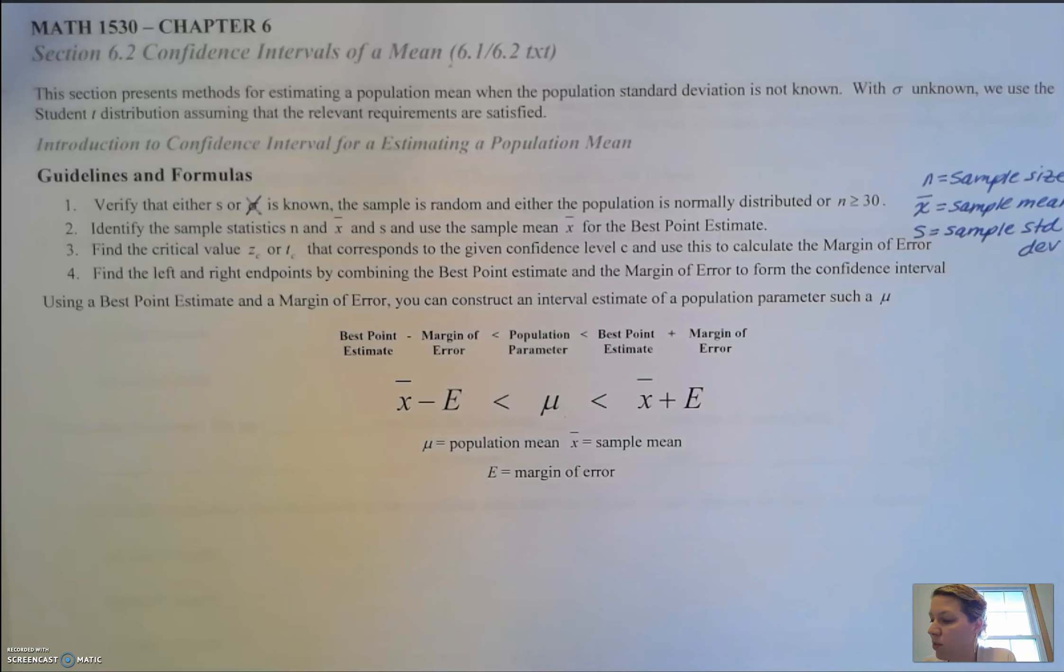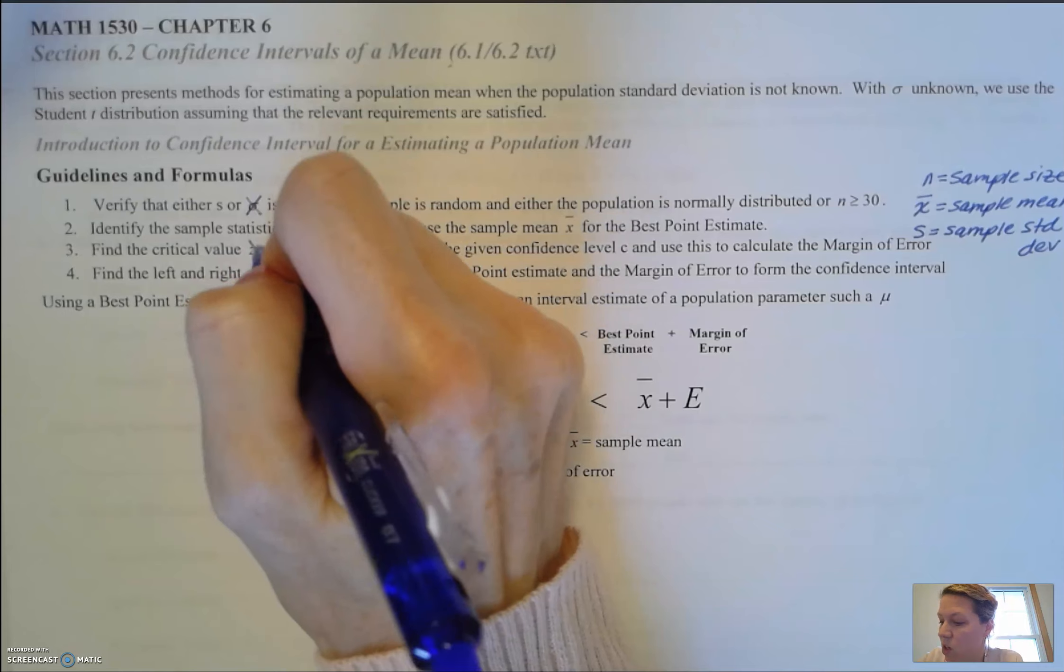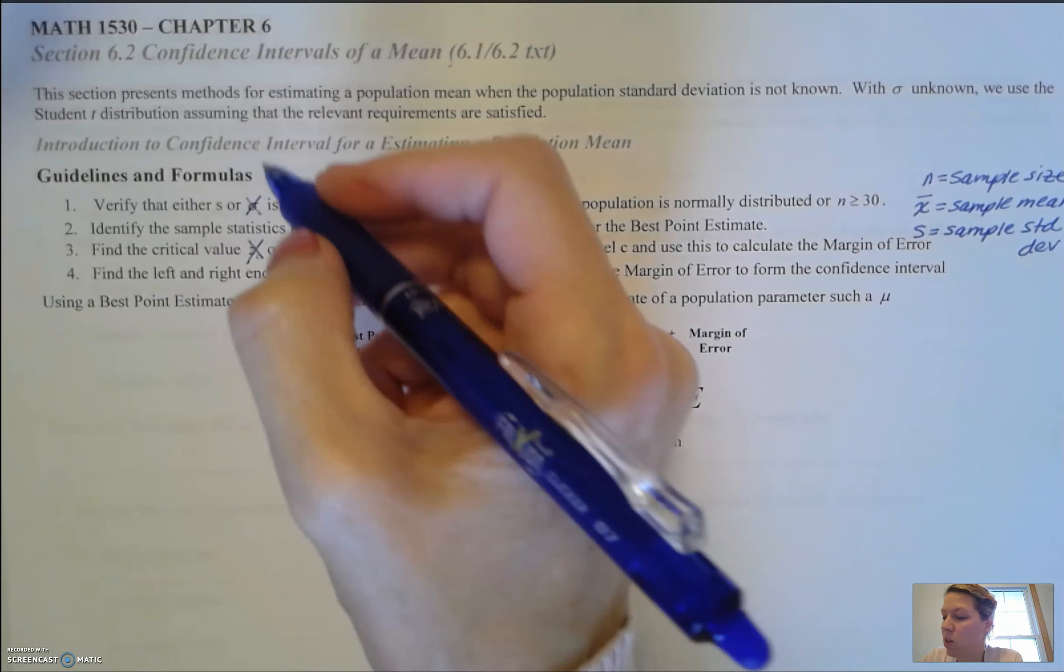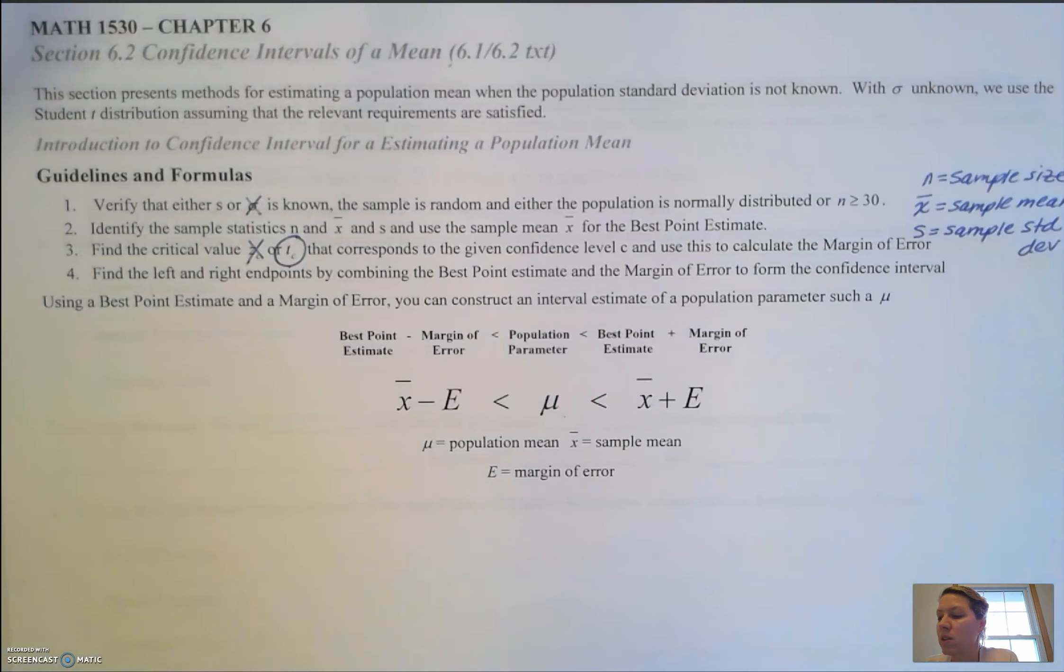We use the sample mean for the best point estimate. We're going to find the critical value—the t critical value in this case—that corresponds to the given confidence level. We're going to have a 95 or 99 percent confidence level and use that to calculate the margin of error. We'll have our best point estimate and our margin of error.